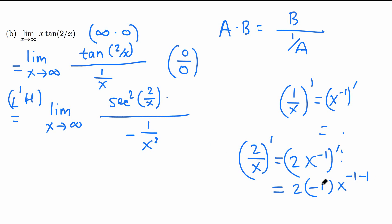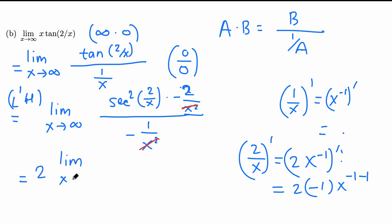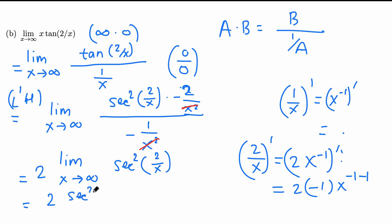Now we can cancel things from top and bottom before taking the limit. The x² cancels, and the negatives cancel — negative times negative becomes positive. We can pull the 2 out front, leaving the limit as x→∞ of sec²(2/x). Plugging in x = ∞: 2/∞ = 0, so we have 2·sec²(0).